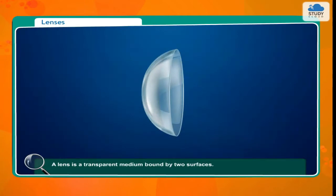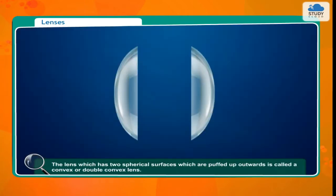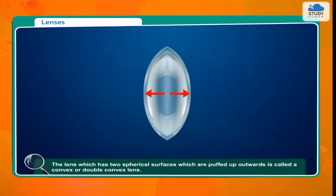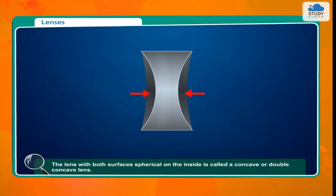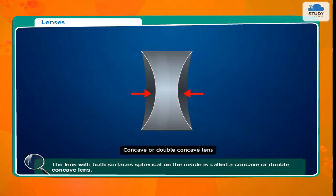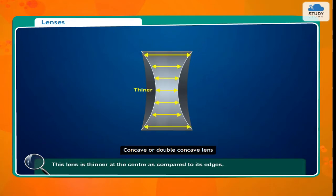A lens is a transparent medium bound by two surfaces. The lens which has two spherical surfaces which are puffed up outwards is called a convex or double convex lens. This lens is thicker near the center as compared to the edges. The lens with both surfaces spherical on the inside is called a concave or double concave lens. This lens is thinner at the center as compared to its edges.